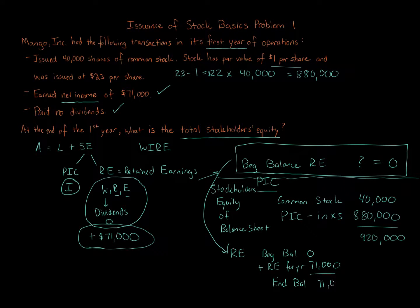So the total stockholders' equity is $920,000 plus $71,000, which equals $991,000. That's the answer. Make sure you understand what's going on—I broke it down using WIRE and the various basics. This is the first problem in a set, so we'll continue with other problems. This sets the baseline for you.